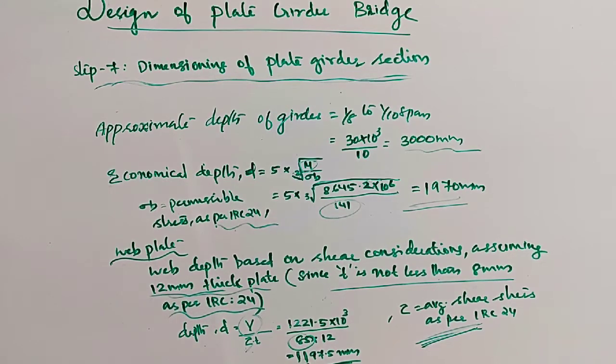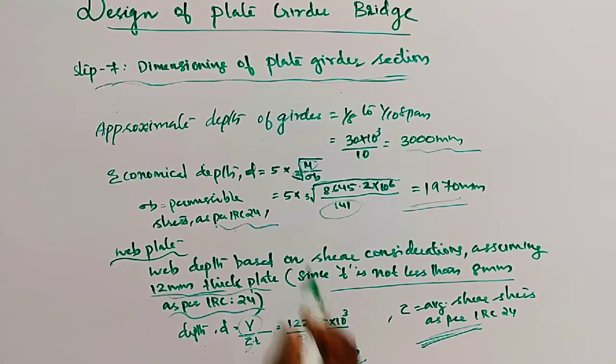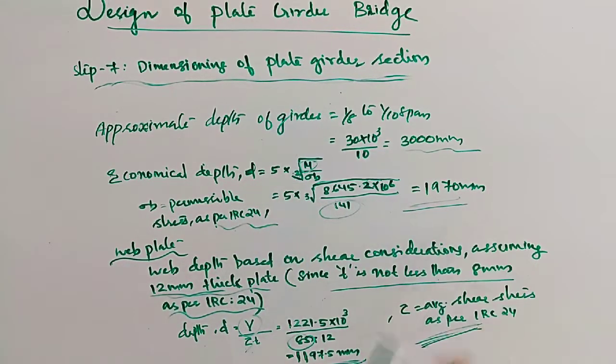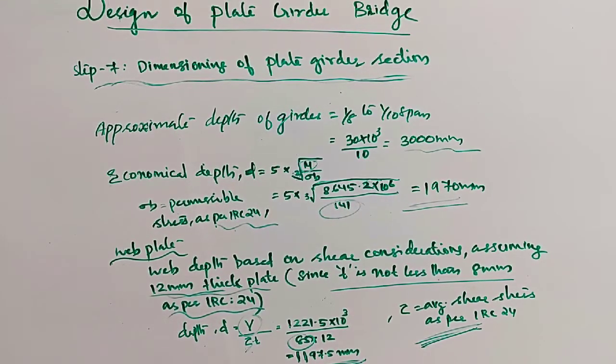We get 1197.5 mm. Here the depth is 1197.5 mm, and the economical depth is 1970 mm. So adopt a web plate.